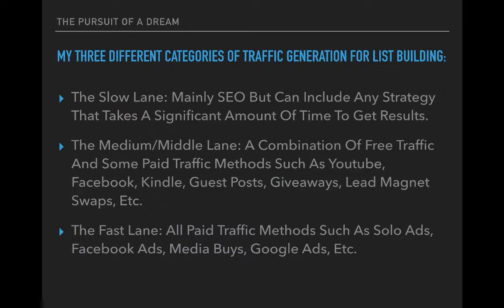And then finally there's the fast lane, which is basically all paid traffic methods such as solo ads, Facebook ads, media buys, Google ads, etc. Basically any traffic generation method will fall into one of these three categories, and each one has its strengths. The slow lane is probably the cheapest but takes the longest time. The fast lane is the quickest way to build your email list but obviously costs the most. The medium lane is the in-between, combining things from the slow lane, some middle-ground methods, and some paid methods from the fast lane as well.